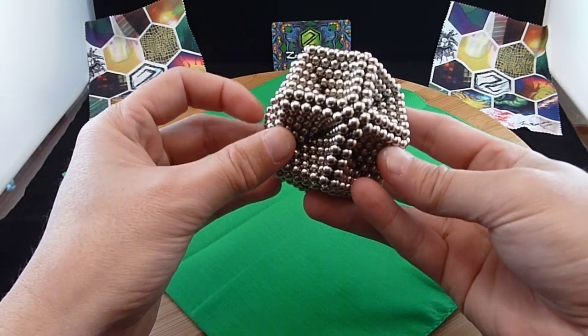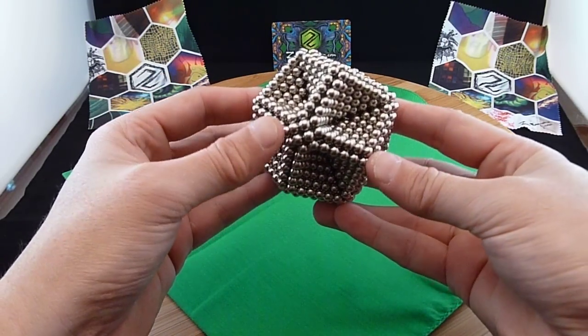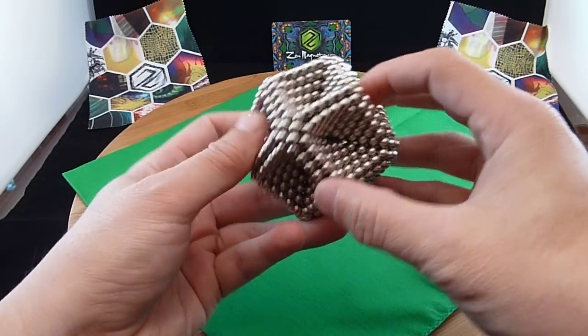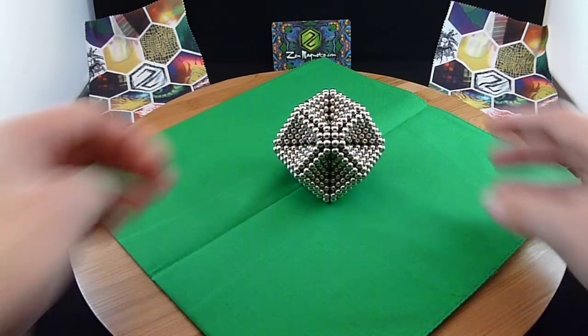Now, with the six wrap hexagons, eight of those, this is a thousand and eight balls. As I said, you can make these with other sizes.